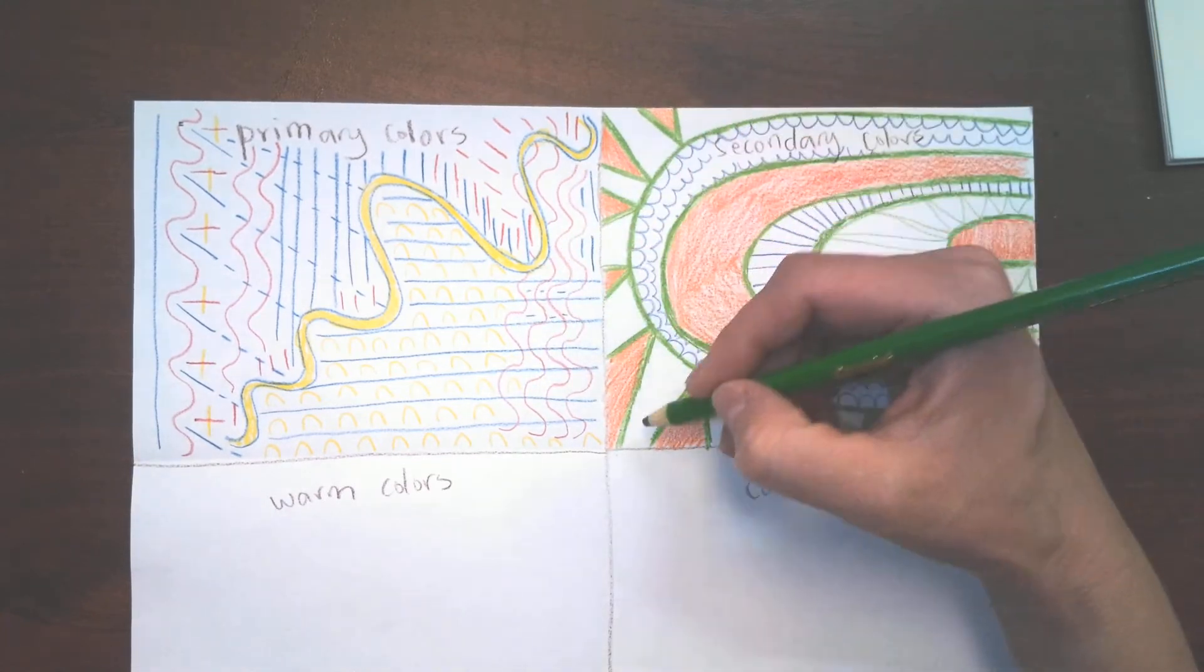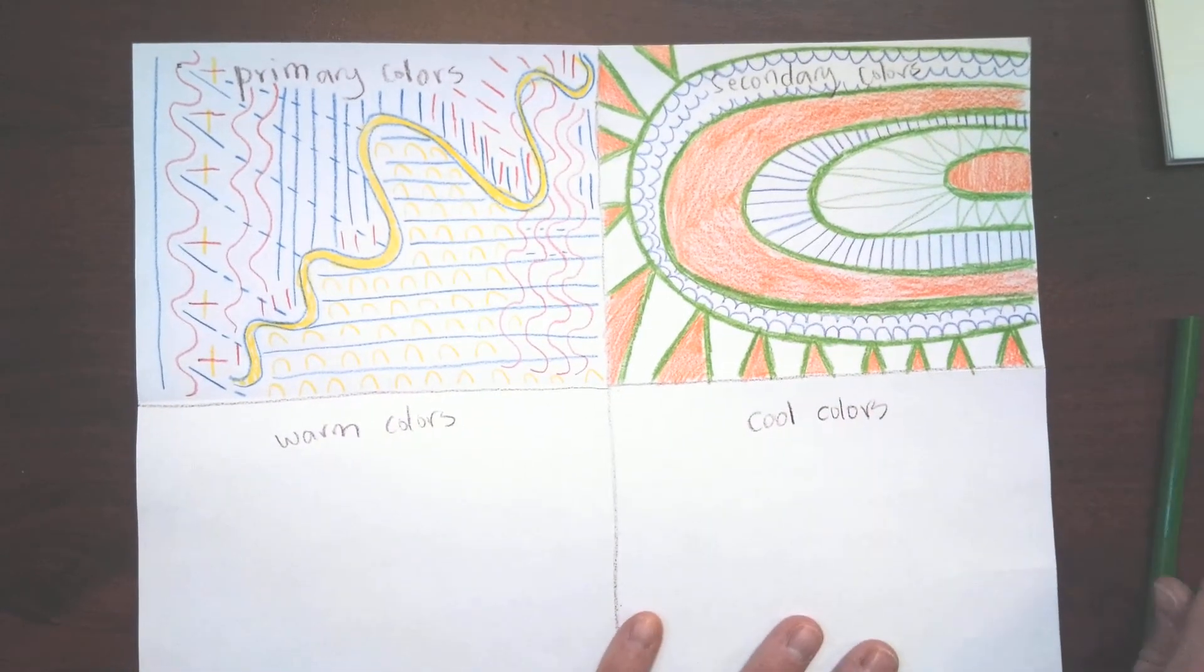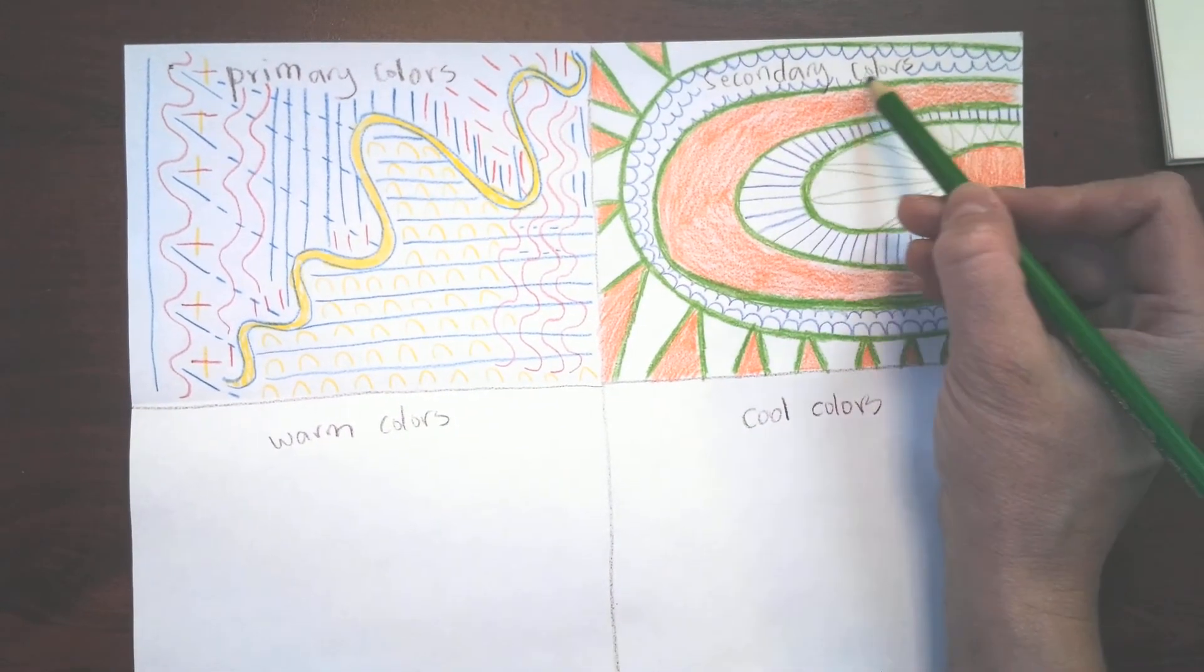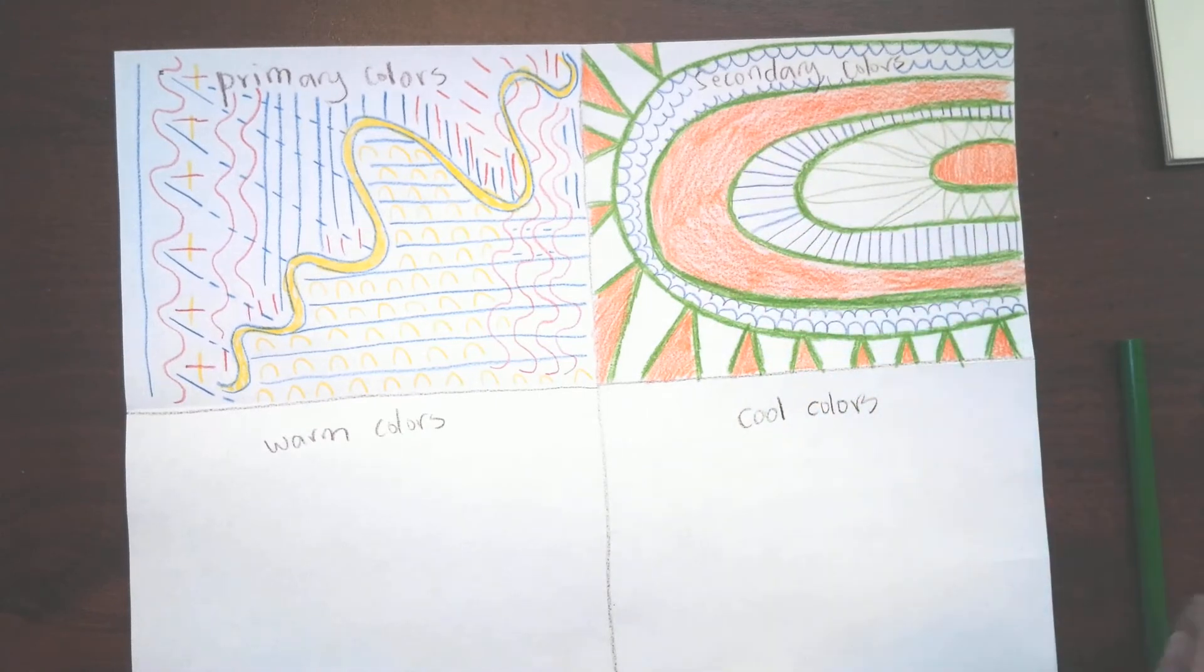So sometimes your zigzag lines can just be points. And then I colored in some of my areas just to add some interest. And this in itself, this orange becomes a really thick line.